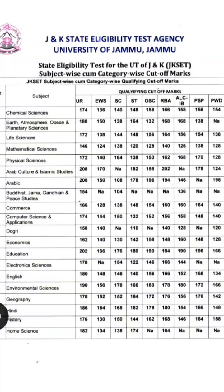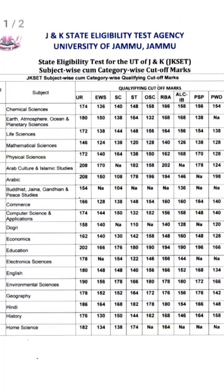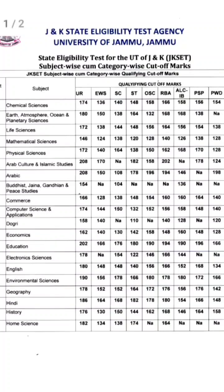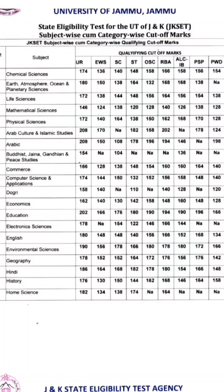Comparing with the 2023 cutoff, you would see that cutoff was actually lower. What we have predicted for 2025 is based on student feedback, as the paper was comparatively easier. I have taken a high margin for the 2025 cutoff, but you can expect around 4 to 6 marks down if the average student feedback indicates the exam was moderate to easy.